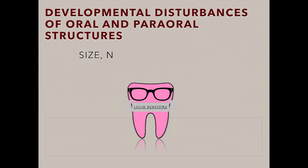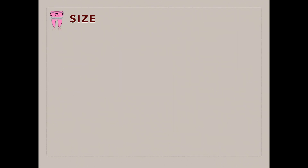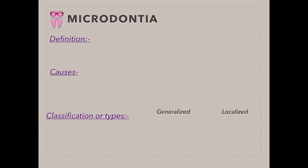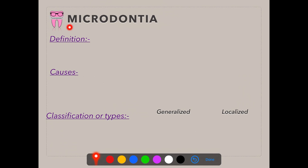Hello everyone, welcome back. Today I'll be talking about developmental disturbances affecting the size, number, and growth of the teeth. Let's start with the developmental disturbances affecting the size of the teeth. Under this we have microdontia and macrodontia. With the name itself, micro means small and doncia means teeth — microdontia means small teeth.